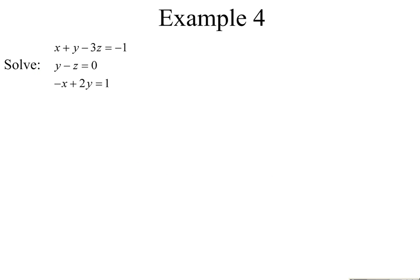Last example, number 4. This one can be somewhat confusing because we have two equations written in terms of only two variables, but they're not the same two variables. The second equation is written in terms of y and z, and the third one is in terms of x and y. Our goal is to get two equations written in terms of the same variables. The second equation is easy to solve for y — we find that y is equal to z.